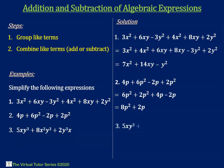Example 3: we are given 5xy cubed plus 8x squared y cubed plus 2y cubed x. We first group like terms, so we have 5xy cubed and 2y cubed x to be alike, and 8x squared y cubed as a lone term. Next is to add or subtract like terms: 5xy cubed plus 2y cubed x equals 7xy cubed, and the lone term is 8x squared y cubed.